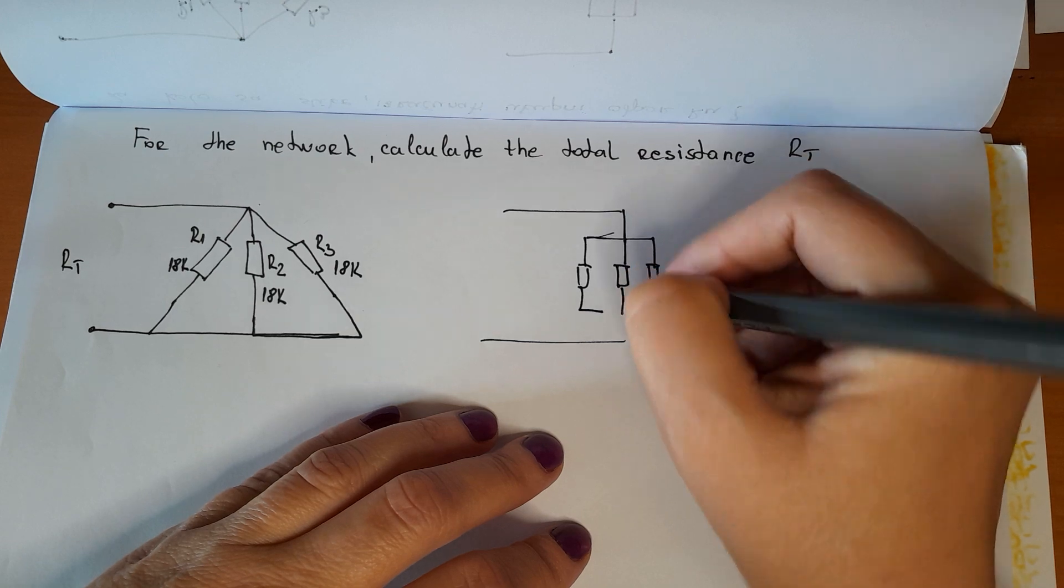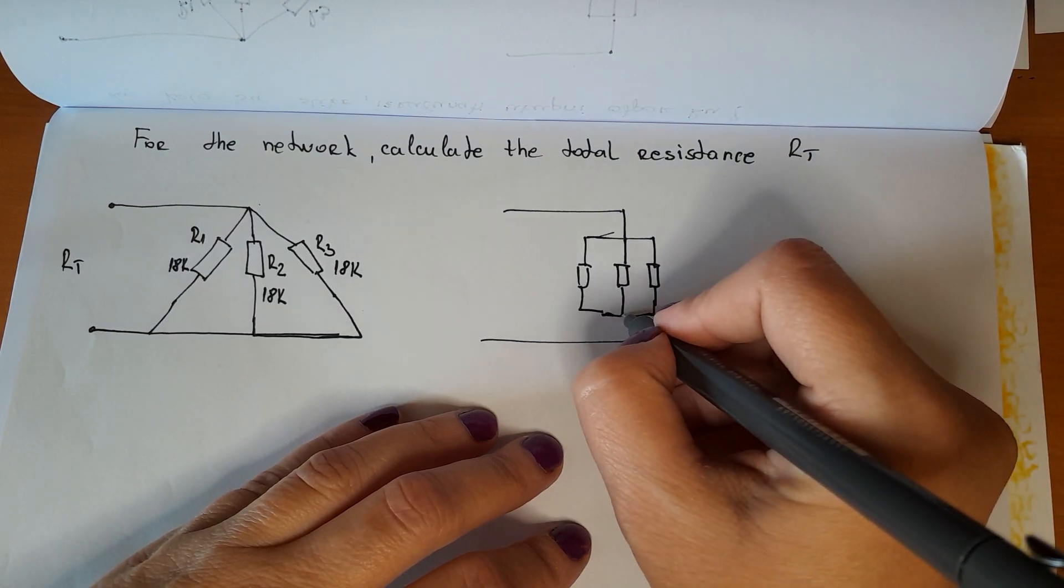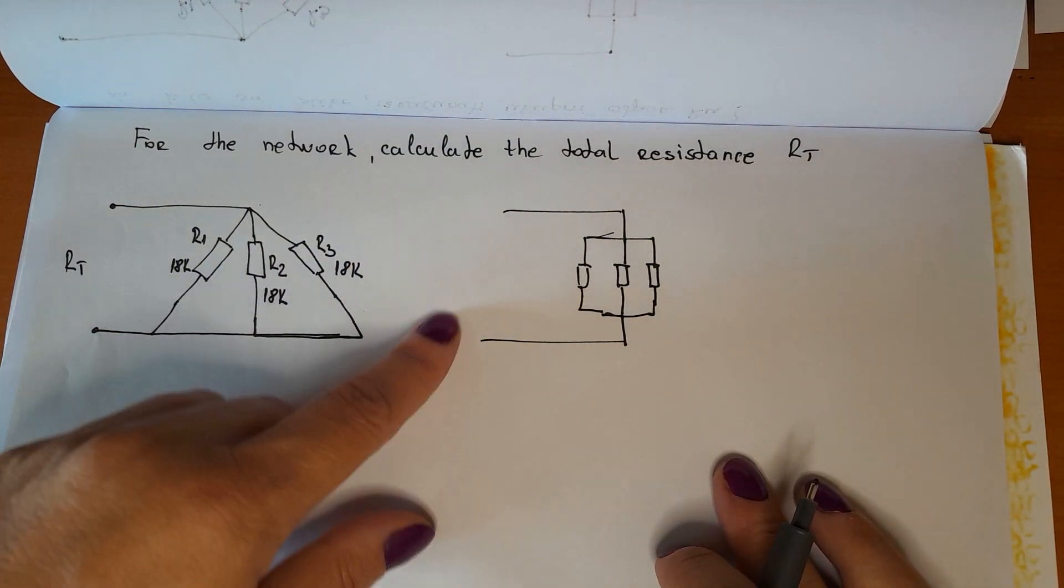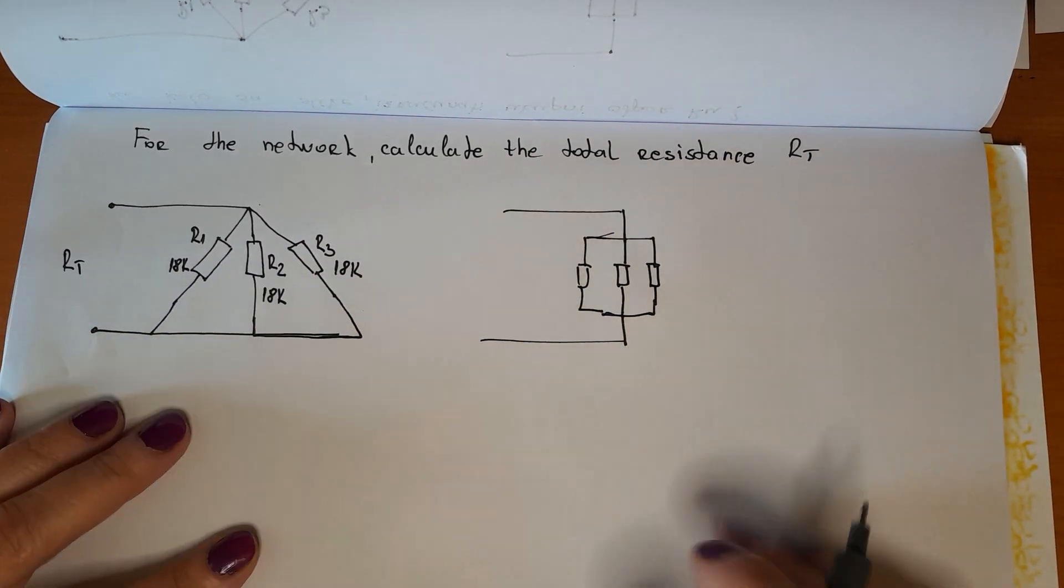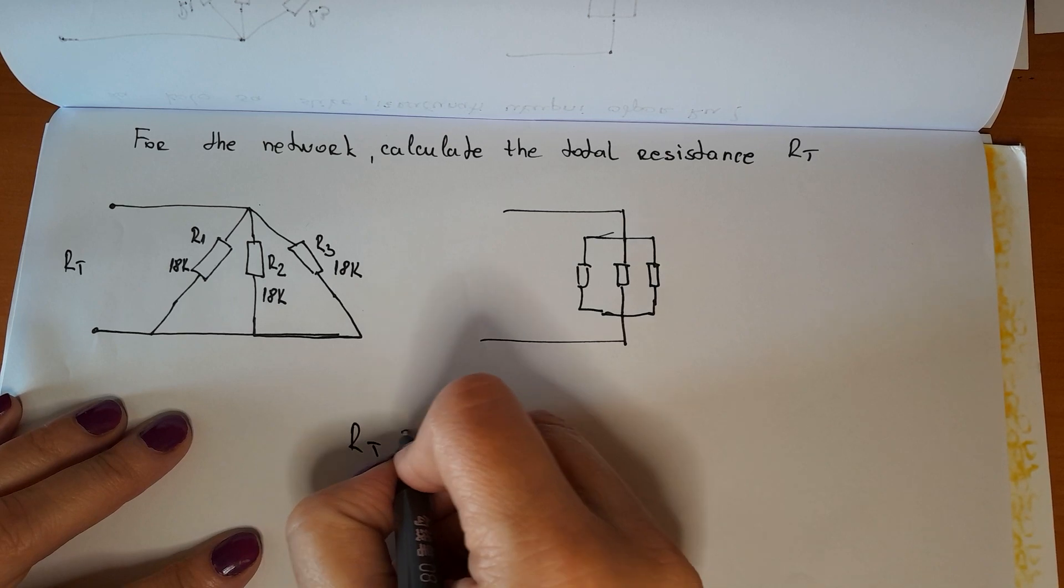Why I'm drawing this? Because it will be easier for you to understand what is the difference by the same thing. And here, since we have all same values, then we can use this formula